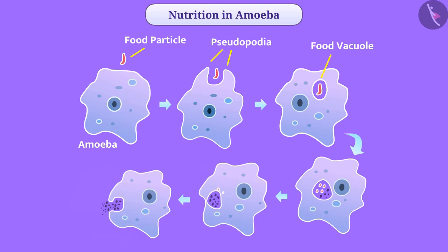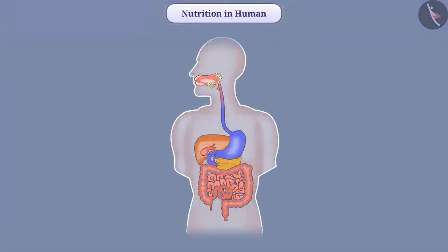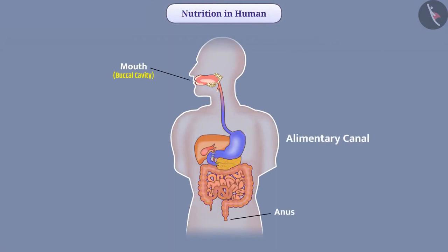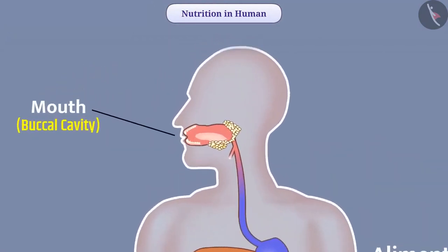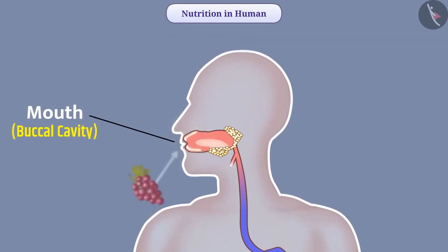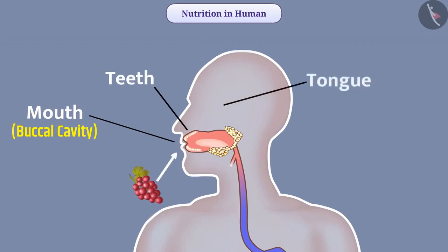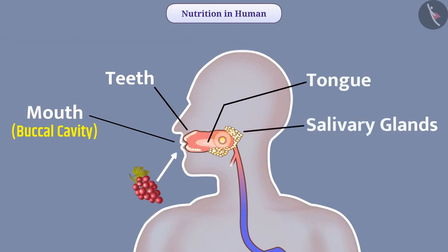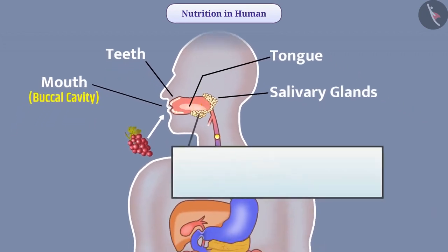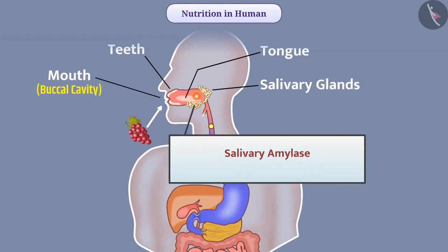Let us now see how the process of nutrition takes place in humans. In humans, there is an extended long tube from mouth to the anus called the alimentary canal. The first part is the mouth, where food is chewed by teeth and converted into small particles. During chewing, the muscular tongue mixes food with saliva secreted from the salivary glands. Saliva wets the food, making it easier to move down. Saliva contains an enzyme called salivary amylase, which breaks the complex molecule starch into simple sugar.